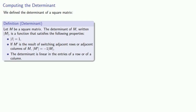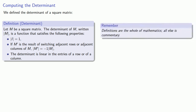We define the determinant of a square matrix to be a function that satisfies a set of properties. Remember, definitions are the whole of mathematics — all else is commentary. This definition alone allows us to compute the determinant of any matrix.